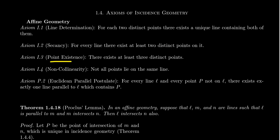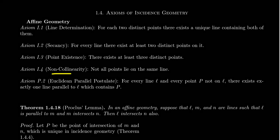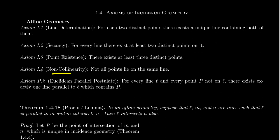Point existence says there are at least three points in the geometry. Non-collinearity tells us that not all points lie on the same line.